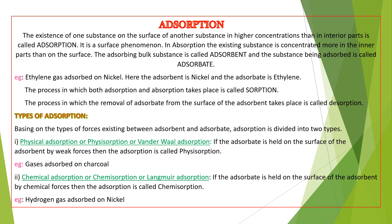There is also a process in which both adsorption and absorption take place. That phenomenon is called sorption. The process in which the adsorbate is removed from the surface of the adsorbent is called desorption. So sorption is the process in which both adsorption and absorption take place, and desorption is the removal of adsorbate from the surface of the adsorbent.